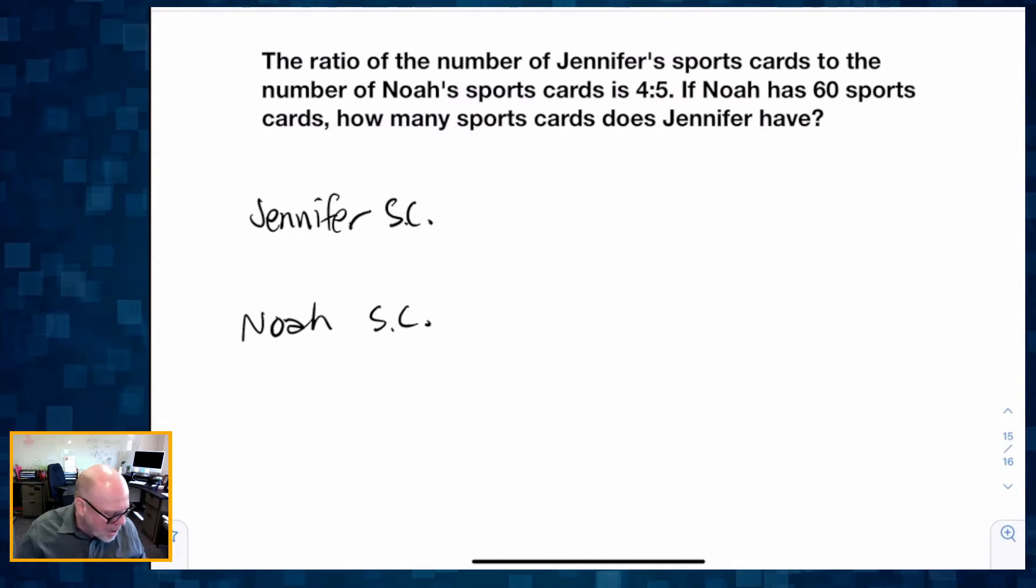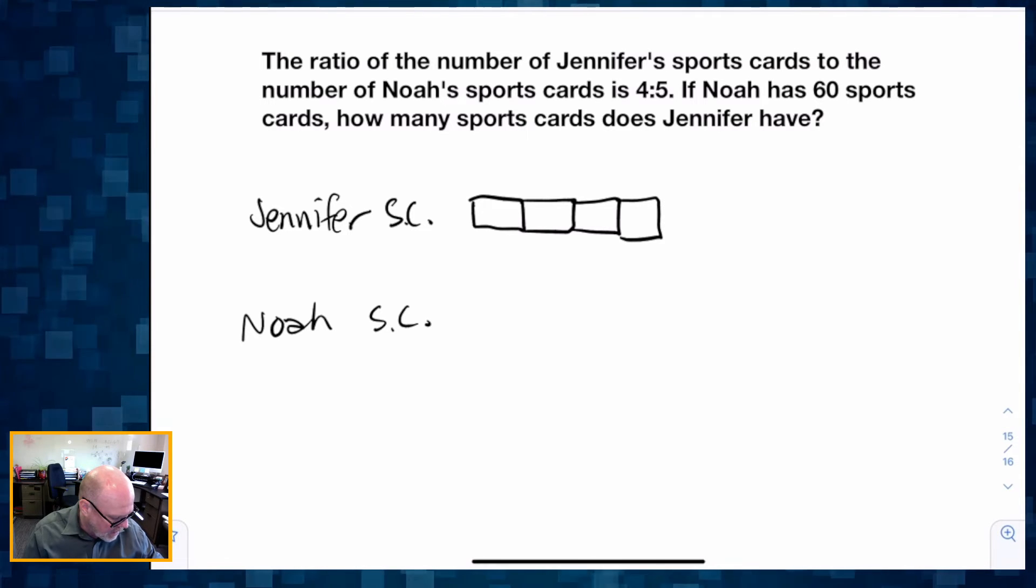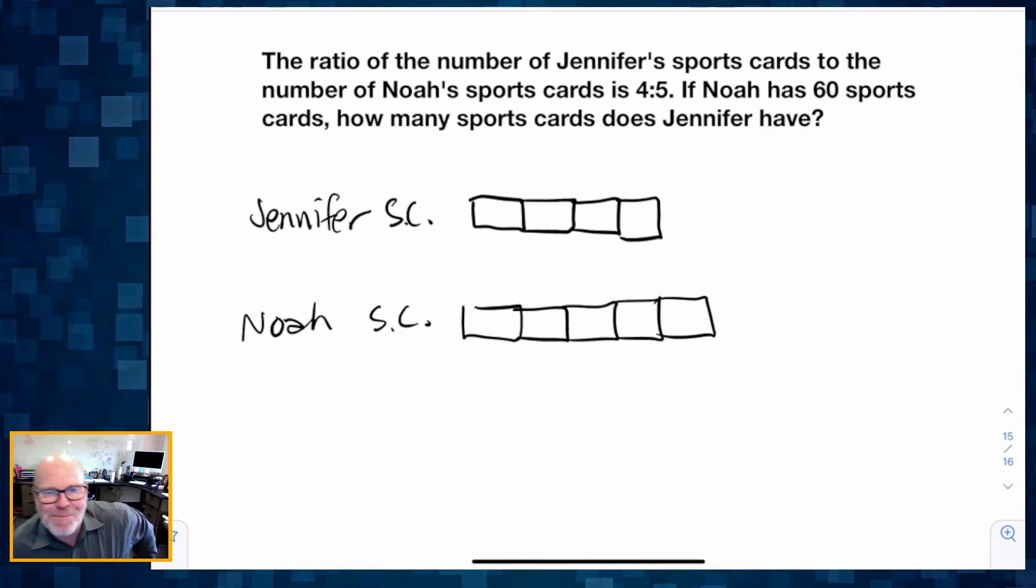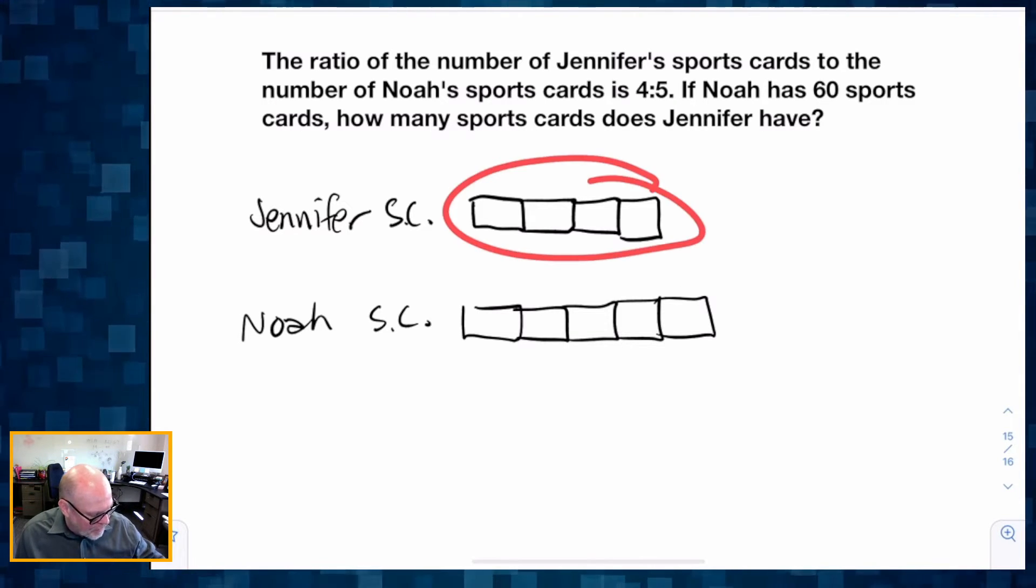Now I'm going to model that ratio of 4 to 5. Just because of the way it's written, we know that Jennifer has the 4 of that ratio and Noah has the 5: one, two, three, four, five. I'm trying to draw them relatively accurately, but we can see there's our ratio of 4 to 5.